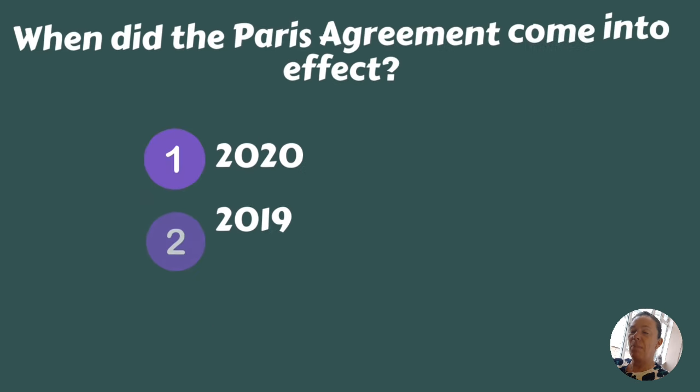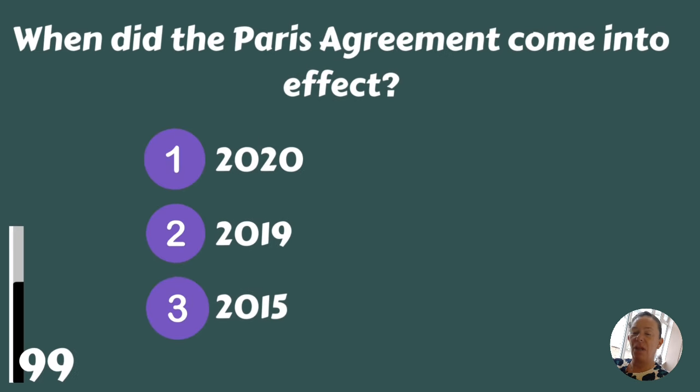When did the Paris Agreement come into effect — 2020, 2019, or 2015?